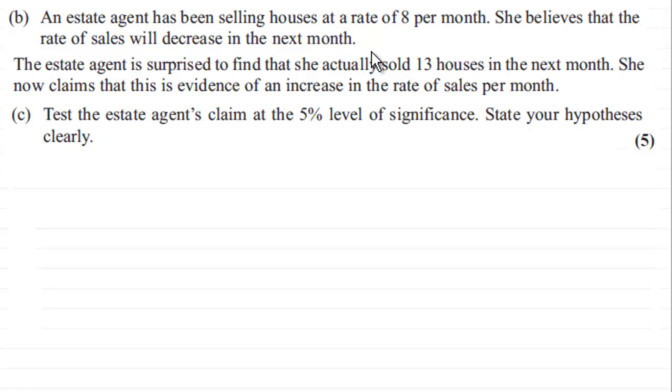The estate agent is surprised to find that she actually sold 13 houses in the next month and she now claims that this is evidence of an increase in the rate of sales per month. What we've got to do is test the estate agent's claim at the 5% level of significance, stating your hypotheses clearly. If you haven't tried this question already and want to give it a go, just pause the video, come back when ready and you can check your work solution with mine.